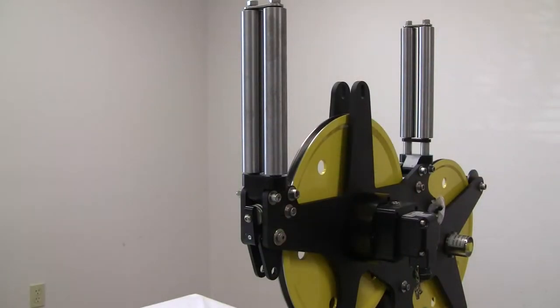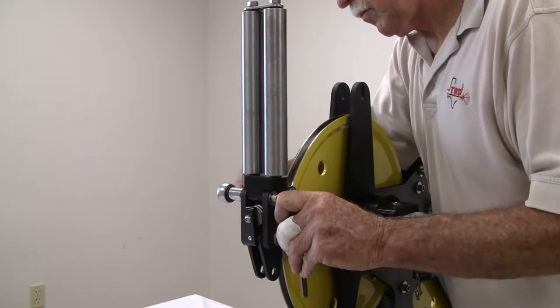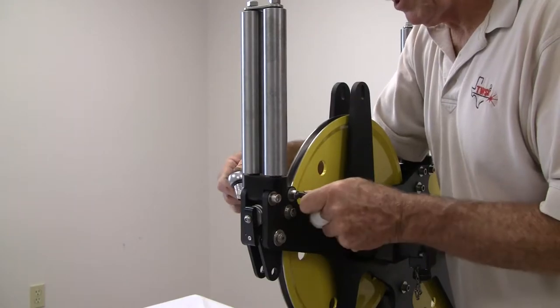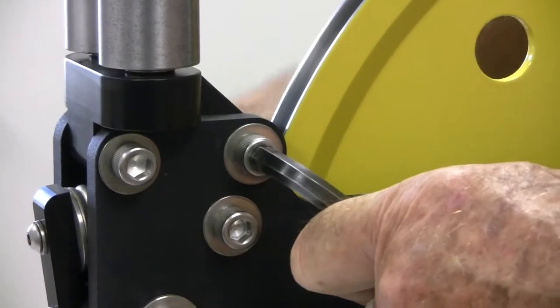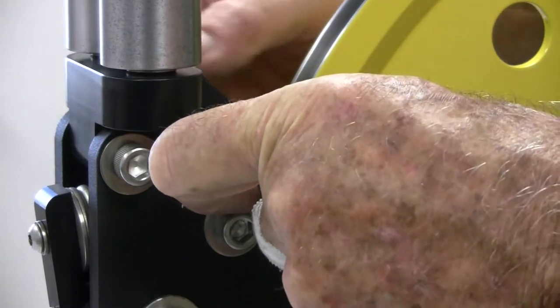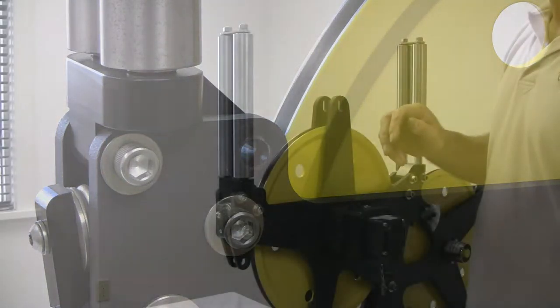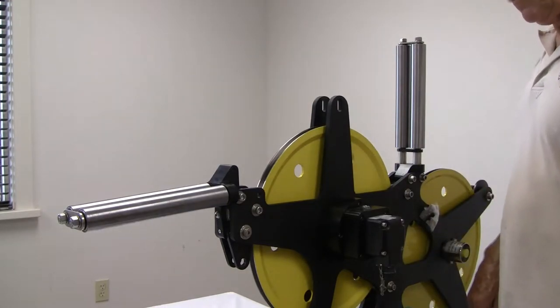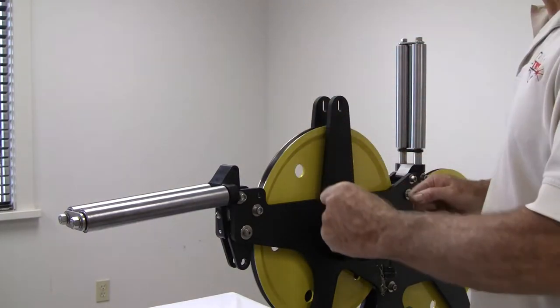We will now swing the front guide rollers out of the way. First loosen the front bolt. Now completely remove the rear bolt. Simply push on the top of the guide roller to swing it out of the way. There is now clearance to remove the measuring wheel from the frame.